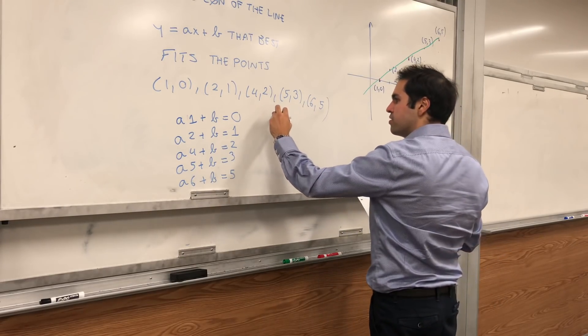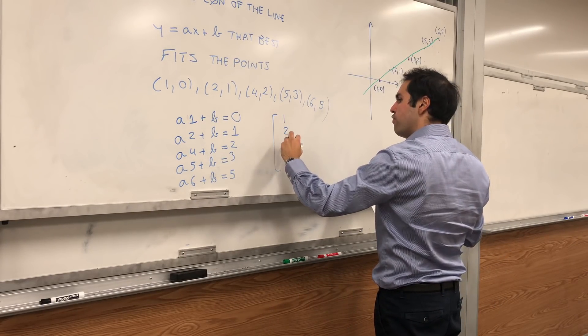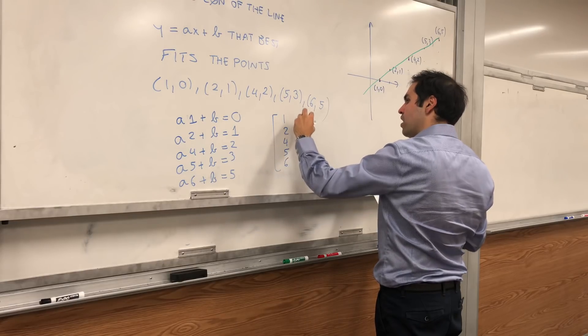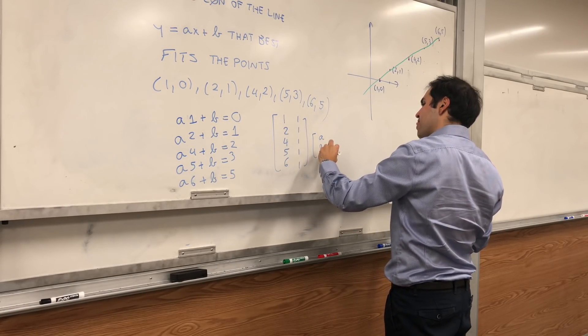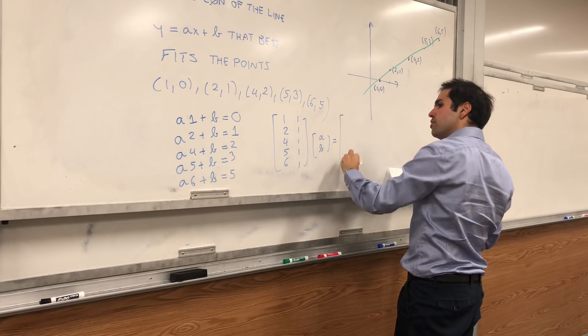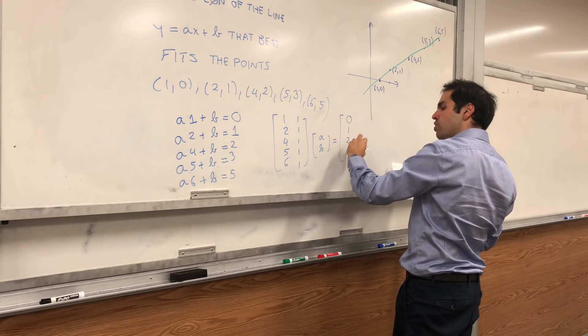Then we would get a system: the matrix [1,2,4,5,6; 1,1,1,1,1] times [A; B] equals [0,1,2,3,5].